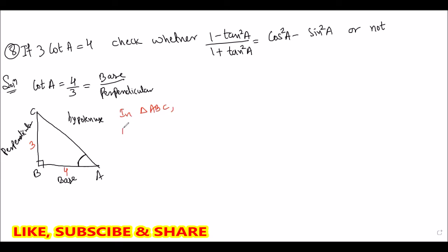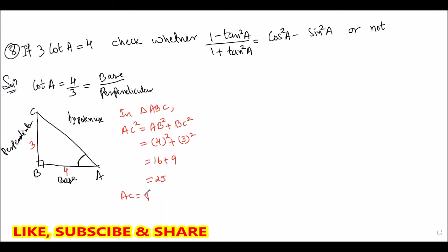Now we have to find the hypotenuse. AC² = AB² + BC² = 4² + 3² = 16 + 9 = 25, so AC = √25 = 5. Therefore AC is 5 units.